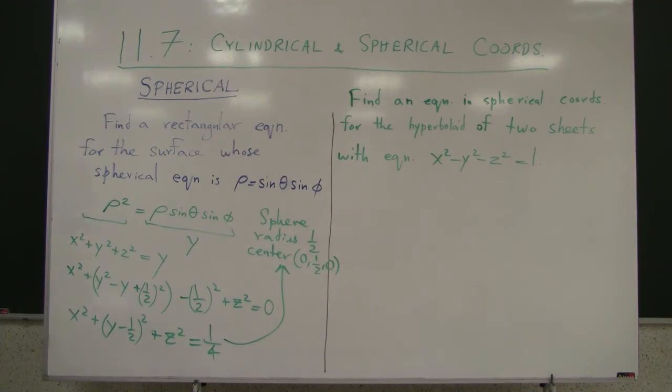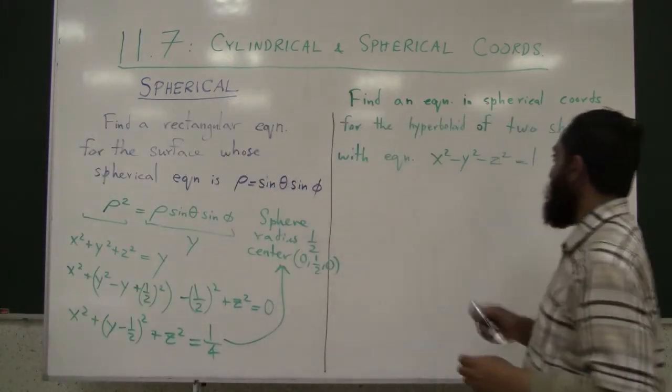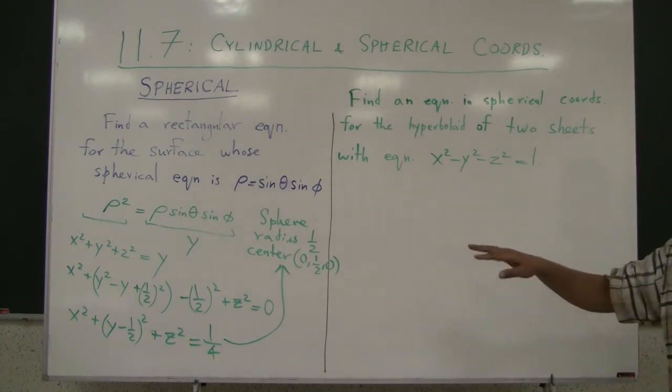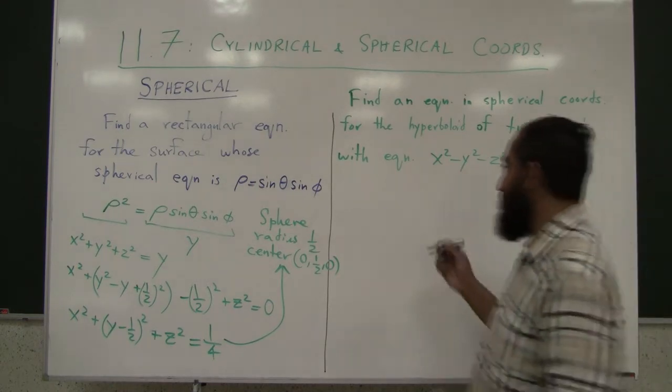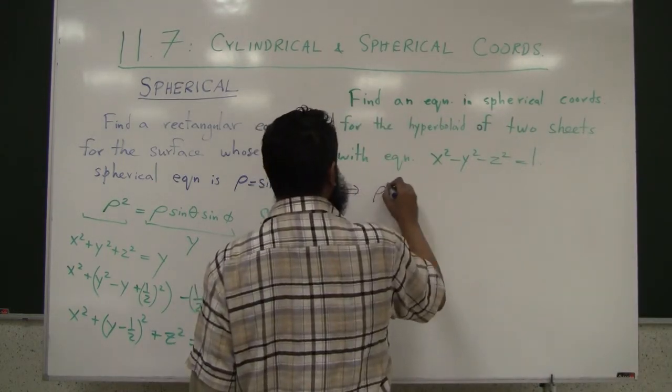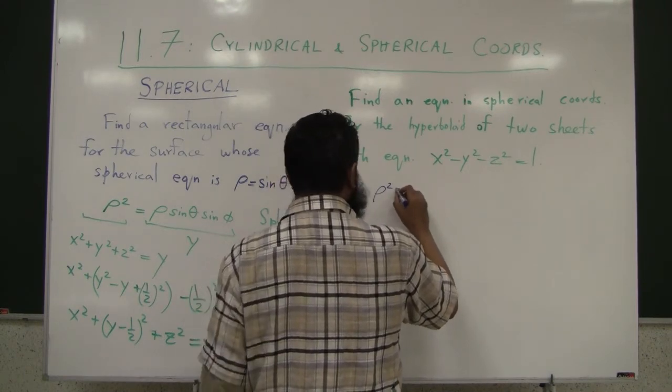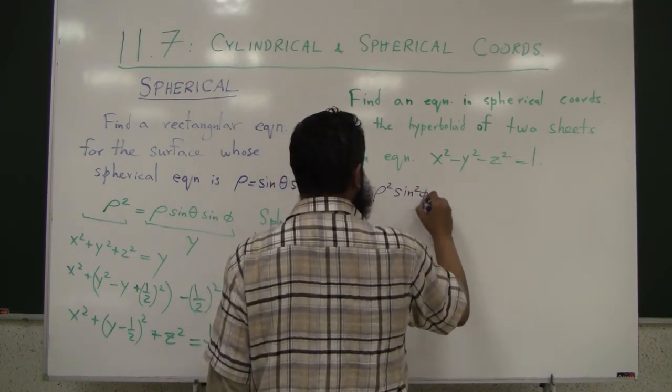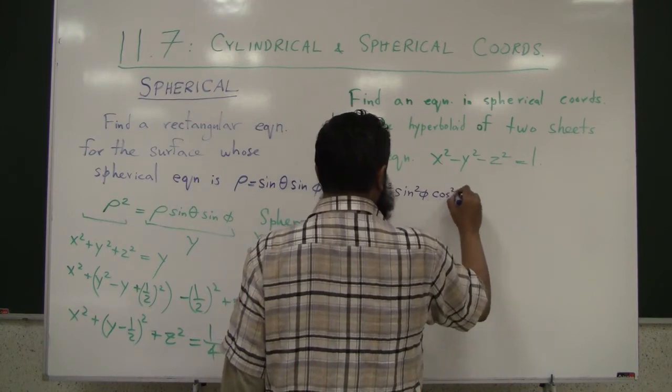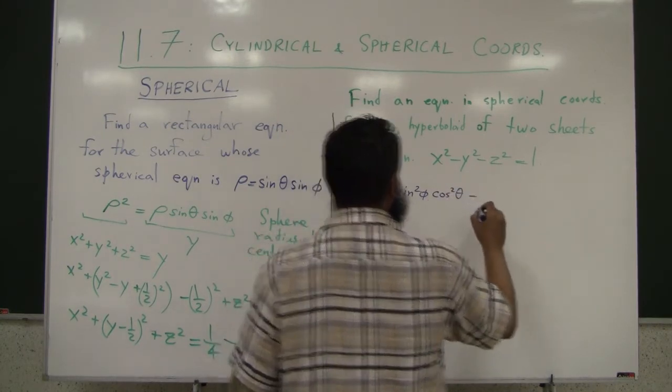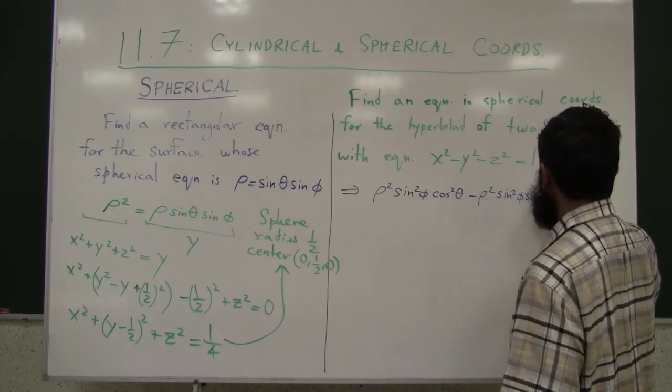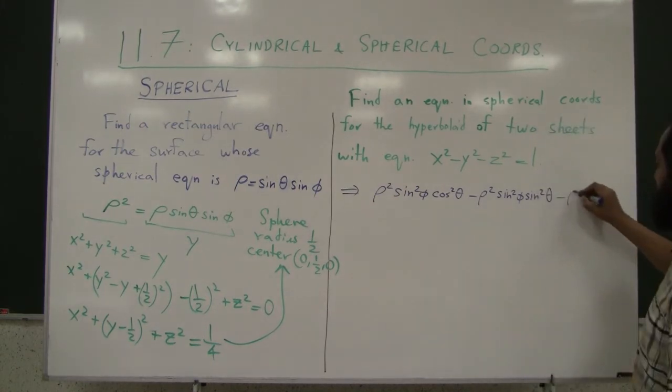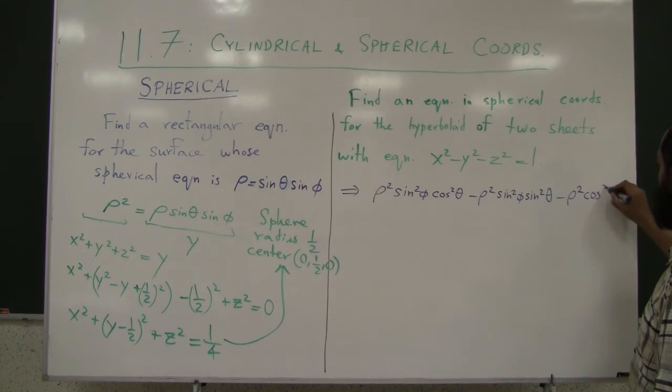Let's do the next example, where this time we are given the rectangular equation. x² - y² - z² = 1. Now, this is relatively straightforward. We already know what x is in terms of ρ, θ, φ, y, z. So we just go ahead and plug those things. So you get ρ²sin²(φ)cos²(θ) - ρ²sin²(φ)sin²(θ) - ρ²cos²(φ) = 1.